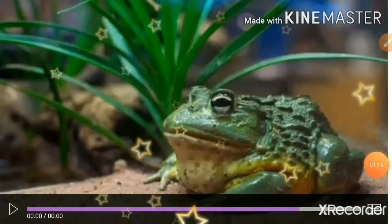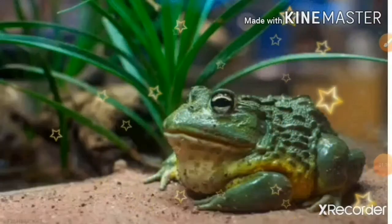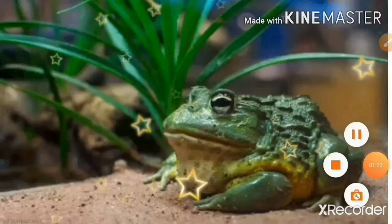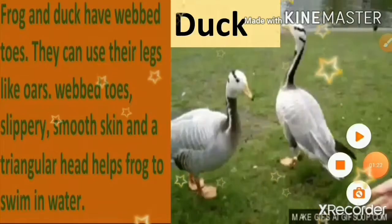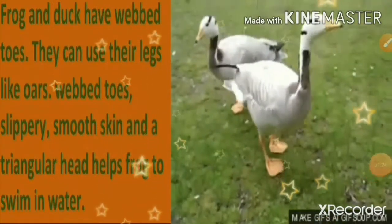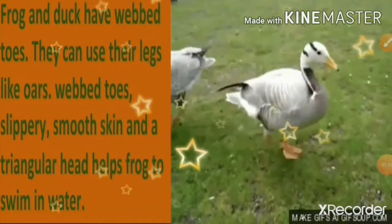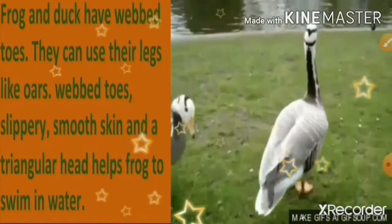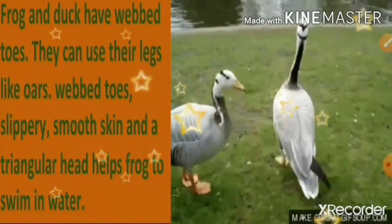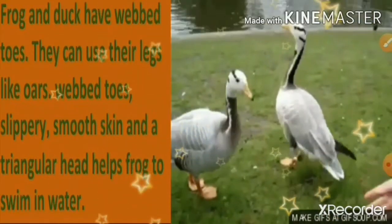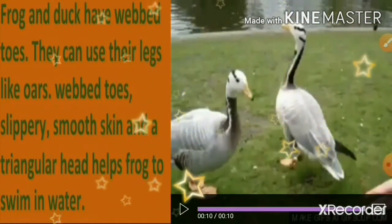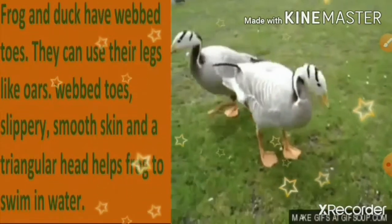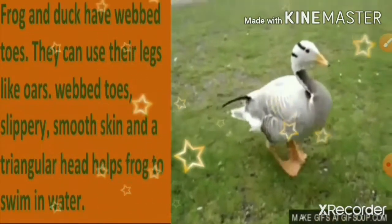The frog lives on land and in water. The frog and duck have webbed toes. They can use their legs like oars. Webbed toes, slippery smooth skin, and a triangular head help the frog to swim in water.